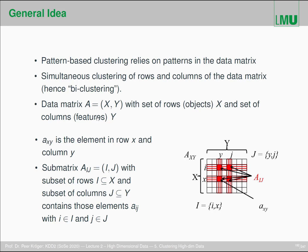They want to simultaneously cluster the rows and the columns. The rows are the features and the columns are the objects of the data matrix. Since they try to simultaneously cluster two things, they are called bi-clustering — another term for pattern-based clustering. The data matrix consists of a set of rows X (the objects) and a set of features Y, and we denote with small a_xy the element in row x and column y.